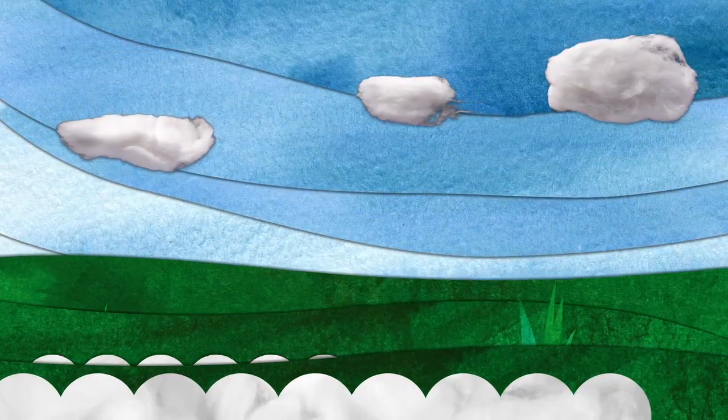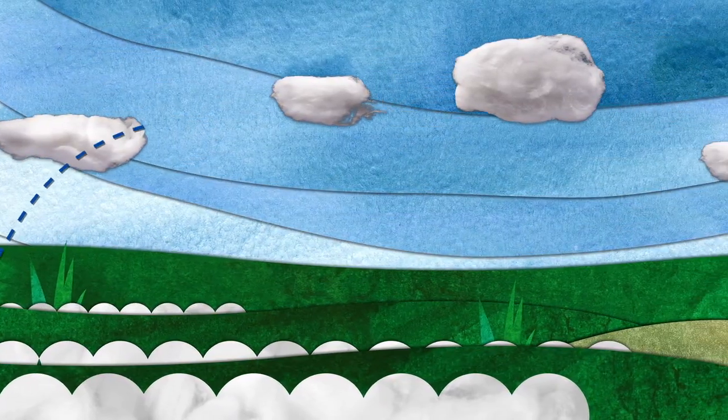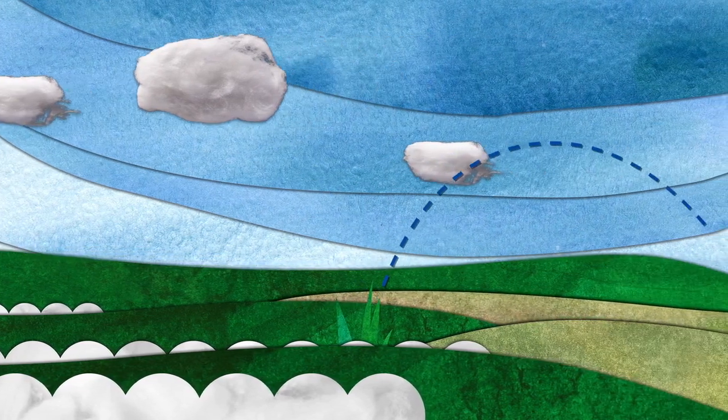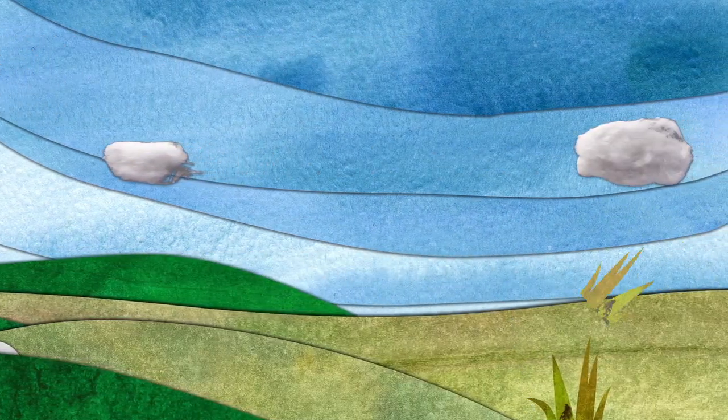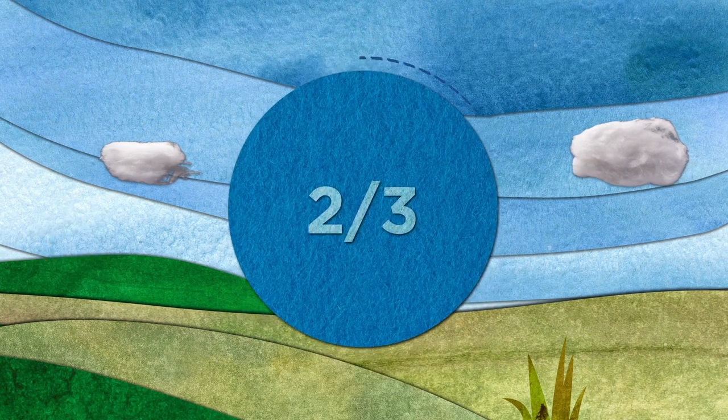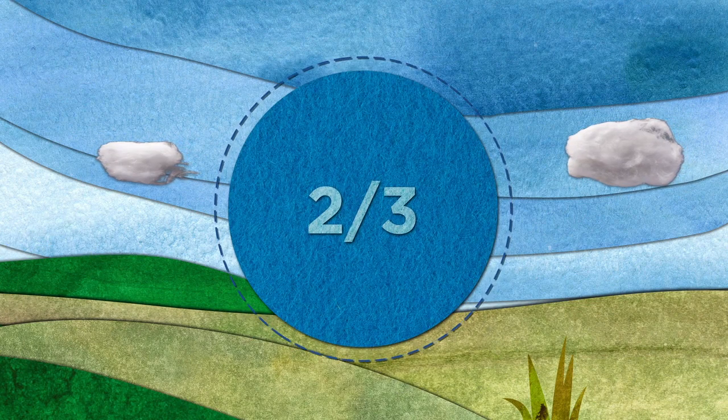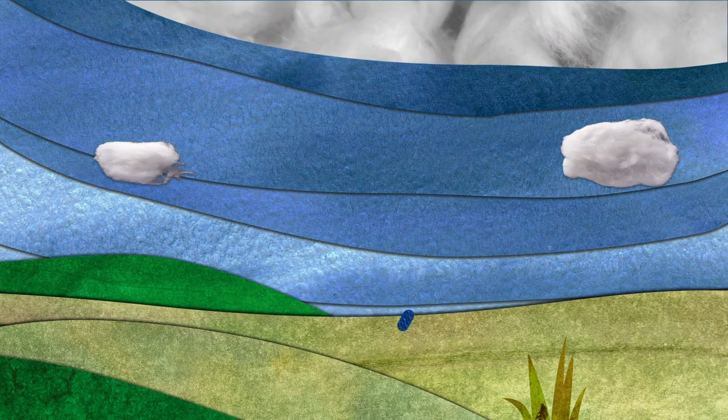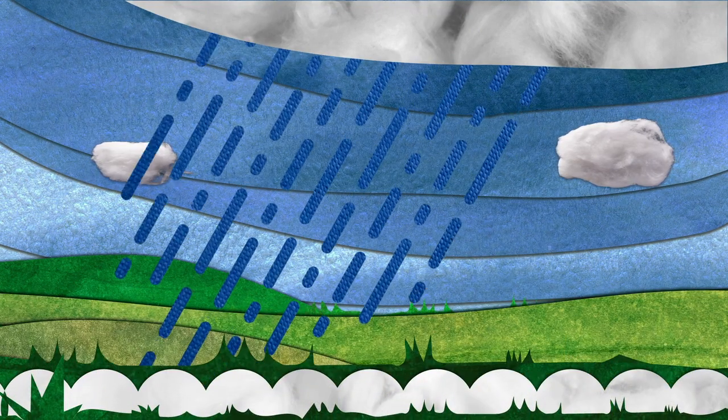Contrary to popular belief, cotton isn't always as thirsty as you'd think and is often grown in areas where other crops wouldn't prosper. In fact, two-thirds of cotton grown in the U.S. isn't irrigated. It uses natural rainfall to grow.